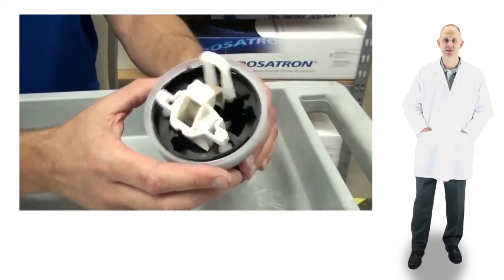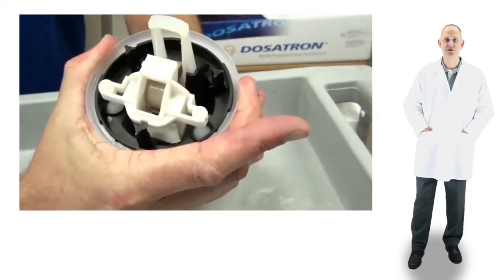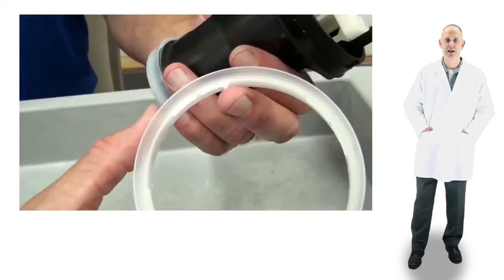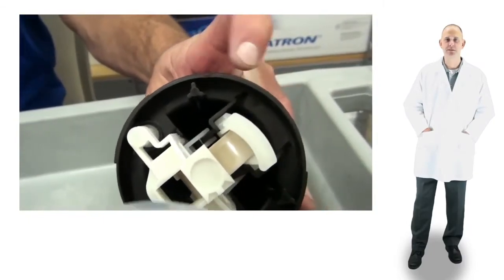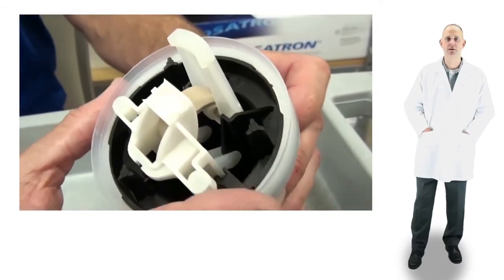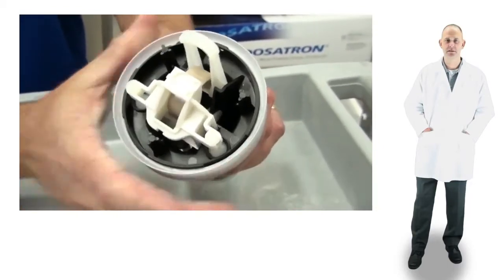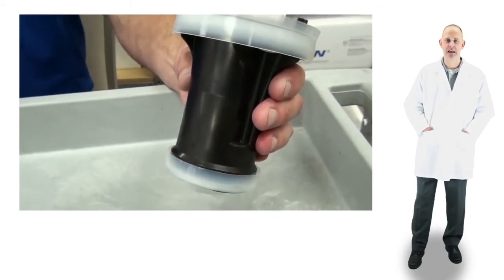To replace the flanges, grasp and twist counterclockwise. Remove by lifting straight up. To reinstall, align the tooth inside the flange with the notch in the piston shell. Press it down into place and twist clockwise until it locks. The procedure is the same for the top and bottom flange.